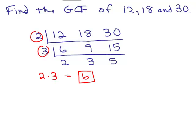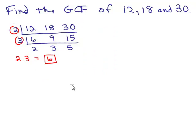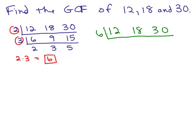Could somebody have done this a little bit differently? Absolutely. Let's do it again with 12, 18, and 30. Somebody might have just said, I notice 6 goes into all those numbers, and they divide by 6 right off the bat. 6 goes into 12 twice, 6 goes into 18 three times, and 6 goes into 30 five times. Then there's only one number on the outside, so the greatest common factor is 6.